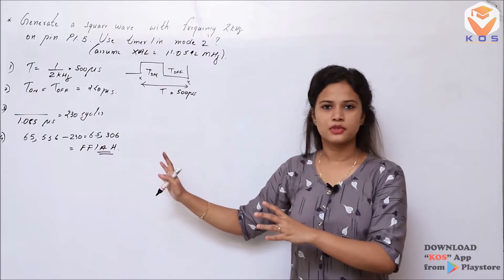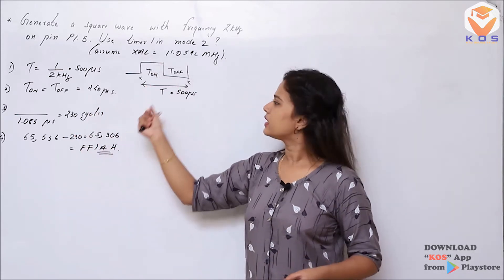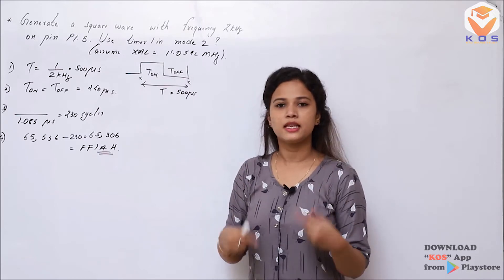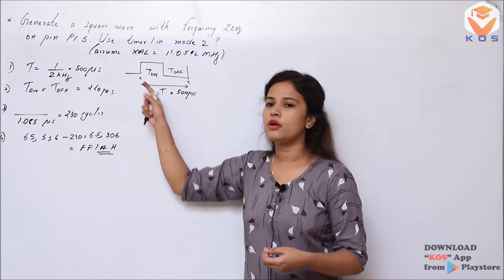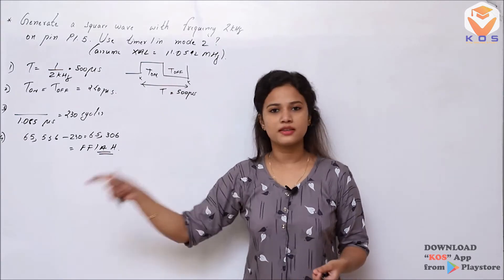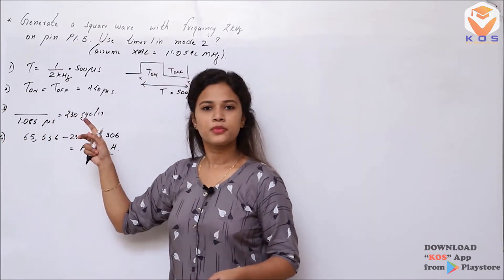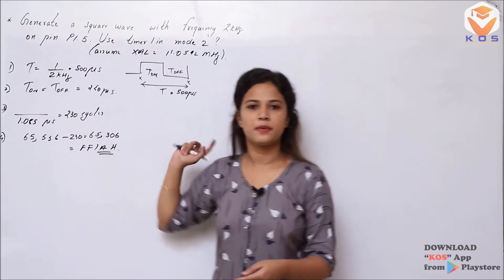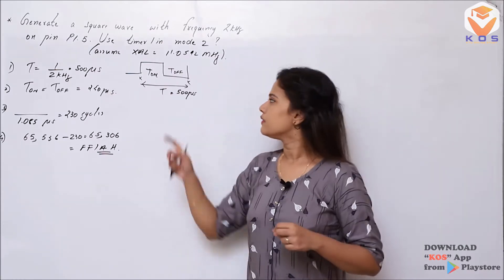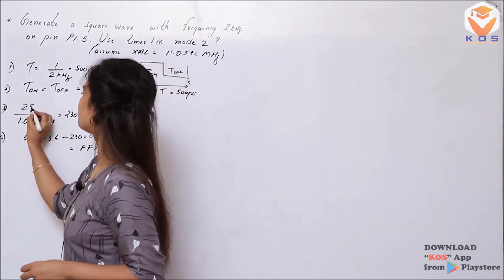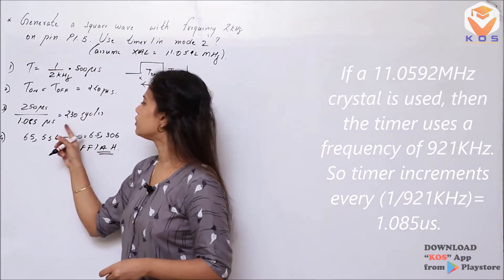What we need to do is follow these steps. We call the T-on and T-off period. If we call T-on, it will correspond to that step; if we call T-off, it corresponds to that step. T-on and T-off are the same in this case. We take the value of 250 microseconds and divide it by 1.085 microseconds, which gives us 230 number of cycles.